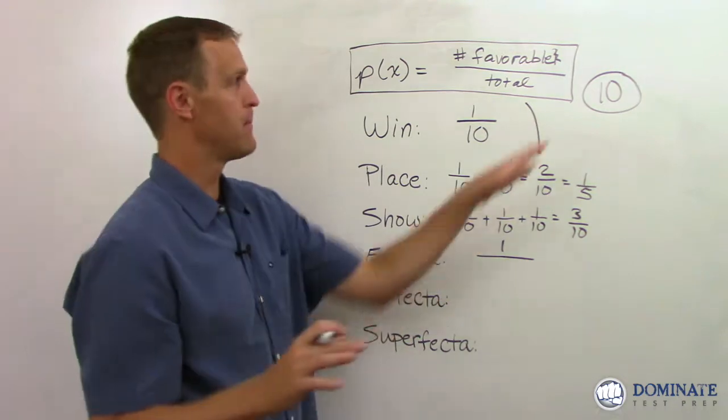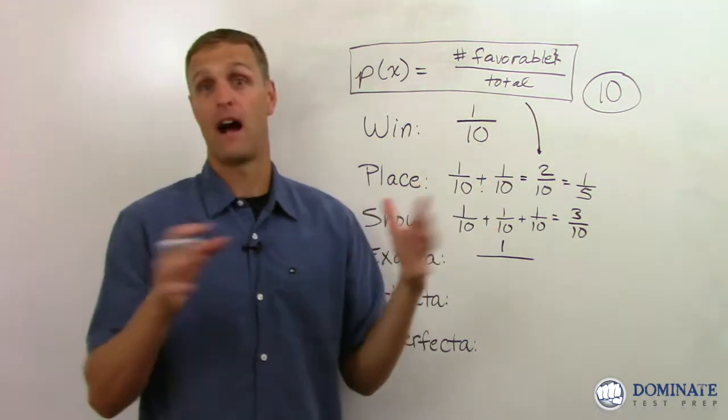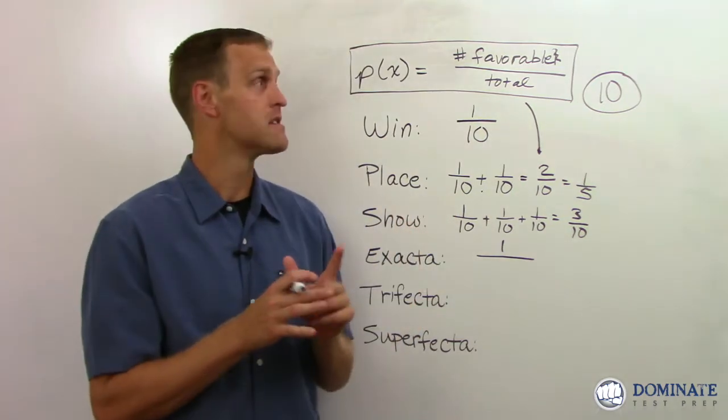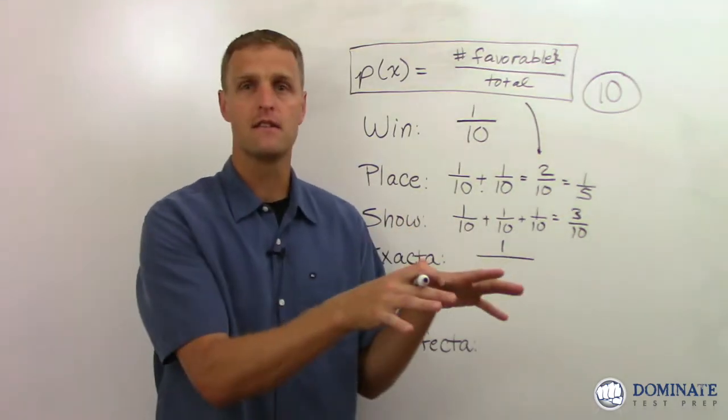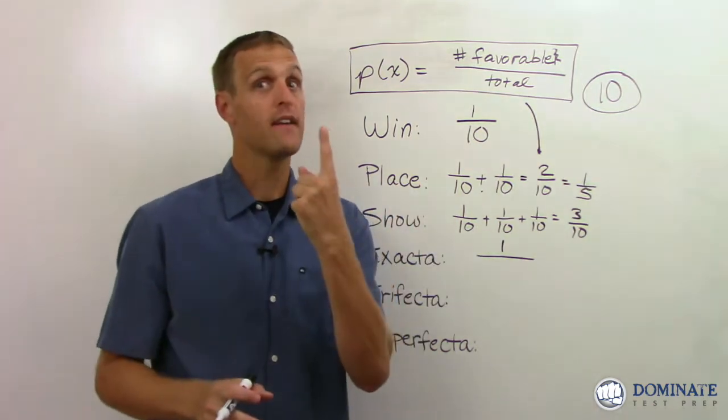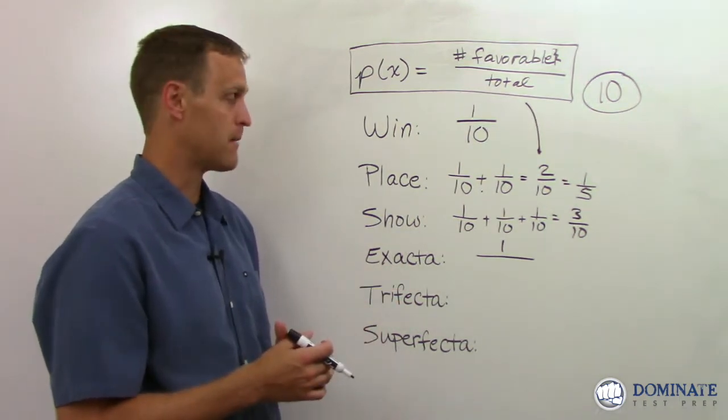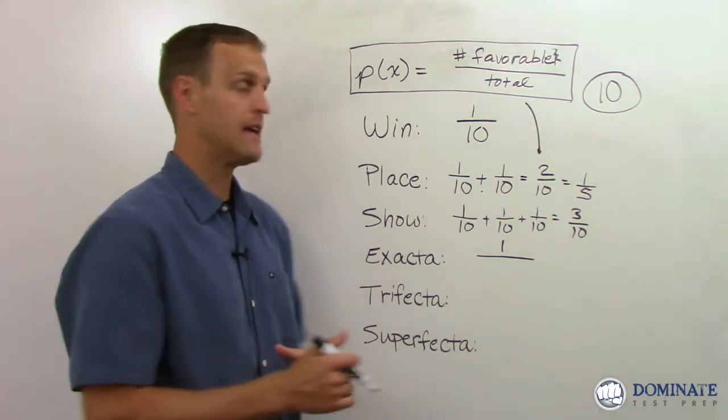Now we're picking two horses, not just one. So the total outcome situation changes. Still only one chance out of something that that is going to happen. There's literally only one combination of all the combinations of the 10 horses finishing. Out of all of those mix and match combinations, only one counts where the winner you picked came first, the horse you picked second came second.